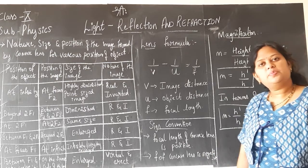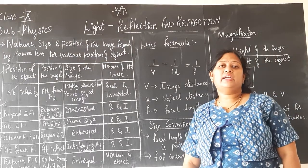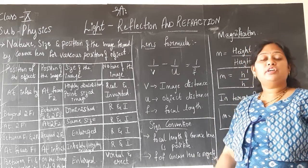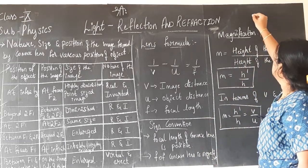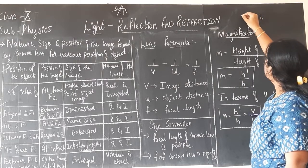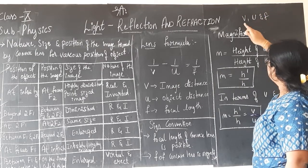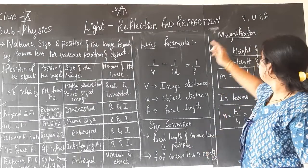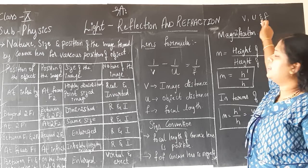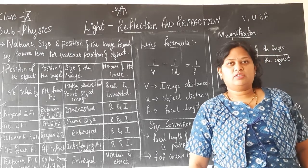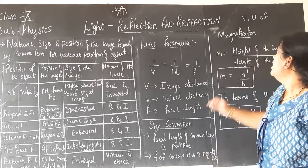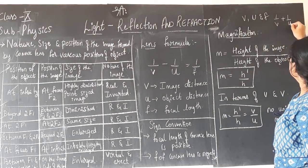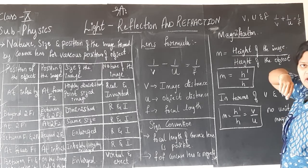When we studied with respect to the spherical mirrors, we had also studied the mirror formula. Hope you remember it. The mirror formula was with respect to u, v, and f — where v is the distance of the image, u is the distance of the object, and small letter f is the focal length. The mirror formula was 1/v + 1/u = 1/f.